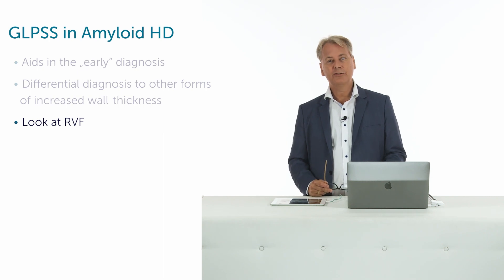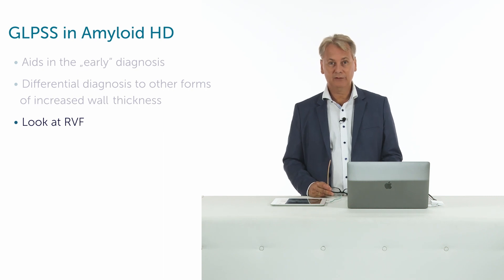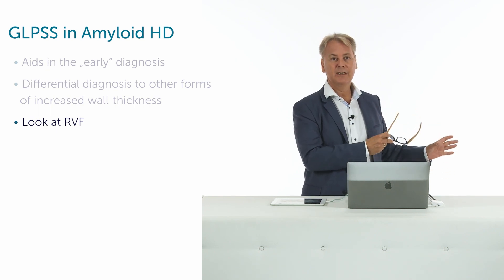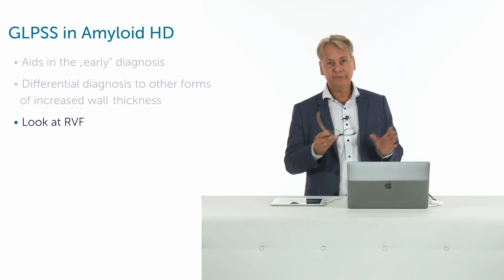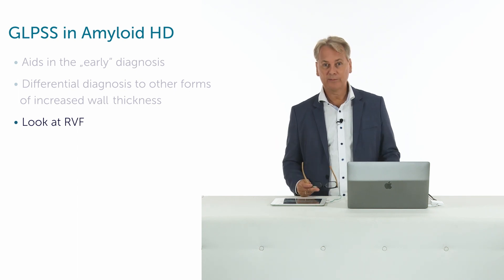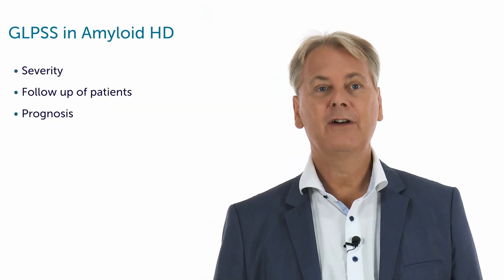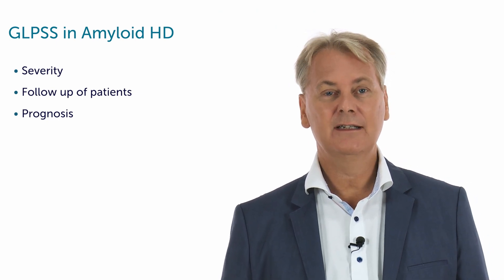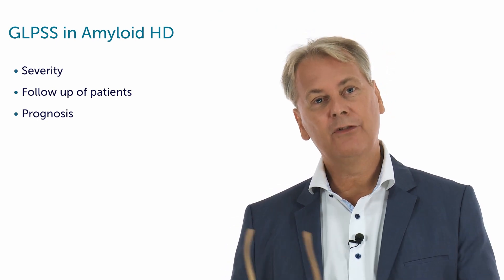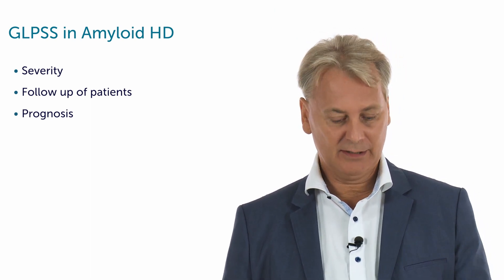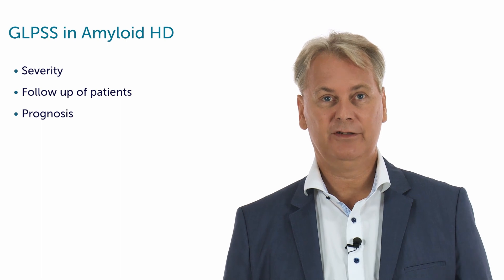We can also look at right ventricle function — very important — because there is evidence that the association of right ventricle dysfunction with left ventricle dysfunction seems to carry a worse prognosis. And finally, we can also look at the severity of the disease, follow up patients, and as we have learned, it also gives us some information on prognosis.